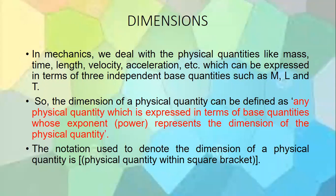In mechanics we deal with physical quantities like mass, time, length, velocity, acceleration, etc. These physical quantities can be expressed in terms of three independent base quantities: mass, length, and time. This is what we call a dimension. The dimension of a physical quantity is defined as any physical quantity expressed in terms of base quantities whose exponents represent the dimension of that physical quantity.